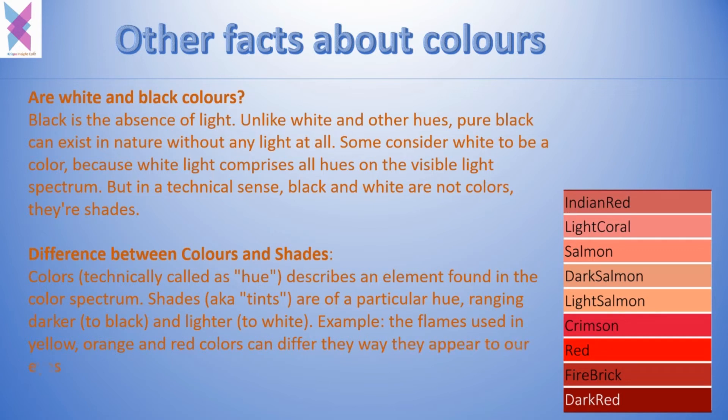For example, flames use yellow, orange, and red colors that can differ in the way they appear to our eyes. You can see in this example that there are reds with different shades but they are called differently because of the darkness or lightness of the shades.